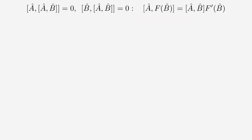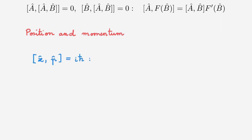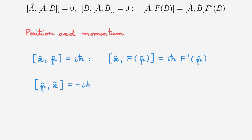As a concrete example, let A and B be the position and momentum operators. The commutator of x and p equals iℏ. This means the commutator of x with f(p) is equal to iℏ times the derivative of f(p). Similarly, the commutator of p with f(x) is equal to minus iℏ times the derivative of f(x). These expressions are extremely useful, and you can find an example of their use in our video on Ehrenfest's theorem, linked in the description.